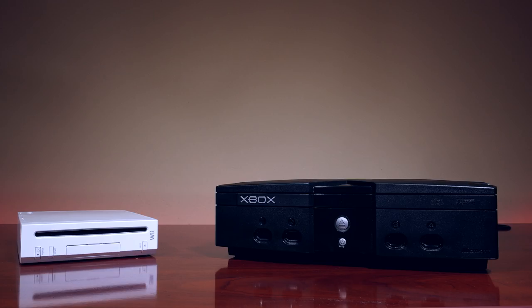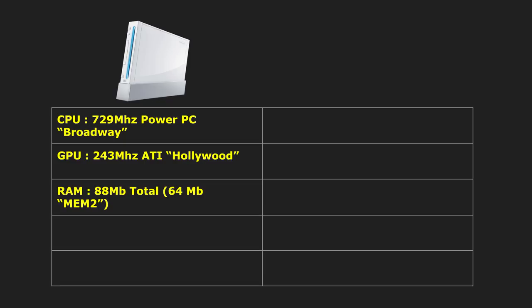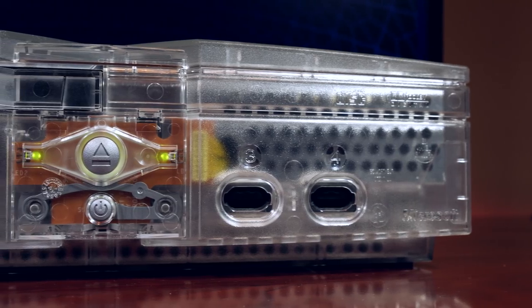Let's compare the two systems side by side. On the left, we have the Nintendo Wii. The 729 MHz IBM PowerPC Broadway CPU powers the system, and the 423 MHz ATI Hollywood GPU handles the graphics and other assorted IO. The Wii comes with a total of 88 megabytes, but only 64 megabytes are available for development, otherwise known as MEM2. The Wii can handle both 480i and 480p progressive scan modes, depending on the cable you're using. There's also 512 megabytes of internal flash storage, and the system storage can be expanded via SD cards and USB.